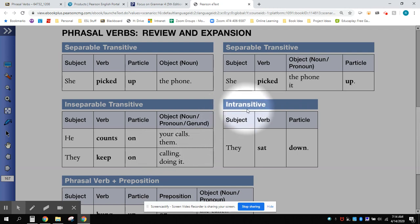If a verb is intransitive, that means it does not have to have an object. So we can just say, they sat down. We don't have to give an object. For example, they sat down here. They sat down on the chair.